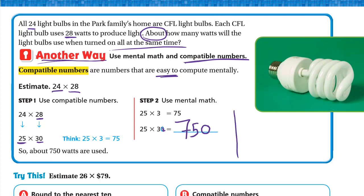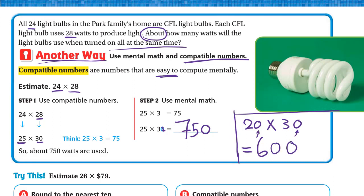What if we used rounding? 24 to the nearest 10: to the right of the 2 we have 4, which is weak, so it becomes 20. 28 to the nearest 10: to the right of the 2 we have 8, which is strong, so it becomes 30. So 20 × 30: we multiply 2 × 3 = 6, and we have two zeros in the factors, so we write them in the product — that's 600. You can solve using whichever method you find easier.